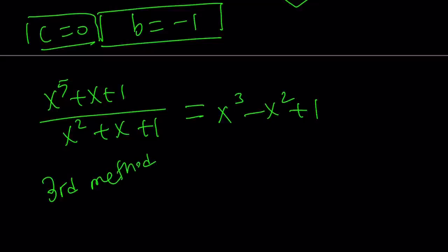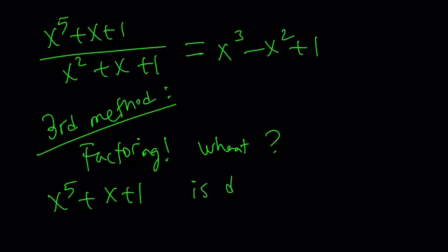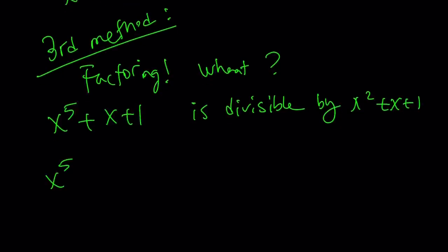Let's go ahead and talk about the most awesomest method, and we're going to use factoring. And what are you going to use factoring? How do you use it? Well, since you already know twice that x to the fifth plus x plus one is divisible by the bottom, which is x squared plus x plus one.